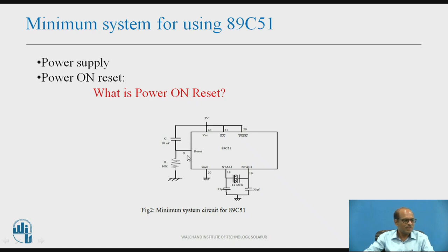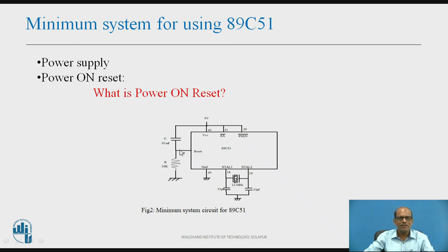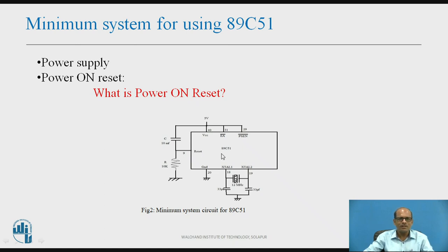Pin number 9 is the reset pin, which is active high — whenever there is a logic 1, the microcontroller will reset. Power-on reset means whenever power supply is given, the microcontroller should reset automatically. The power-on reset circuit consists of a 10 µF capacitor and 10 kΩ resistor. Initially, when supply is turned on, voltage across capacitor C is 0, so pin 9 sees 5V (logic 1) and the microcontroller resets. The capacitor then charges through R; when fully charged to 5V, pin 9 becomes 0 and the microcontroller enters run mode.